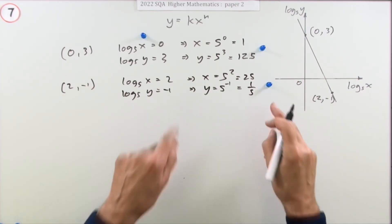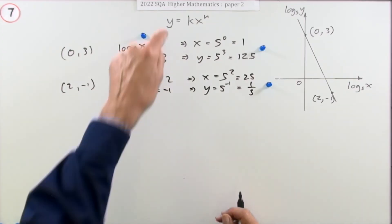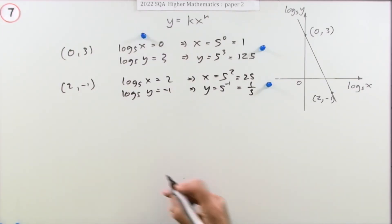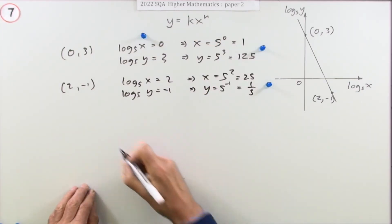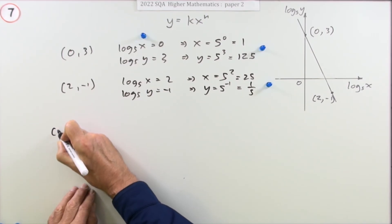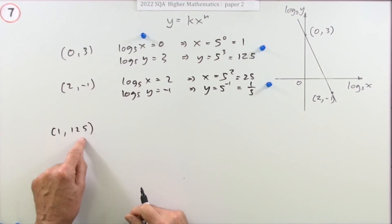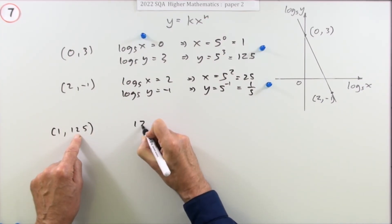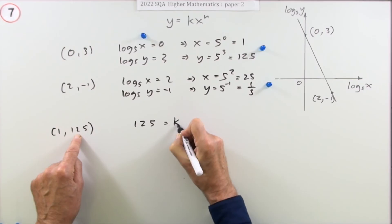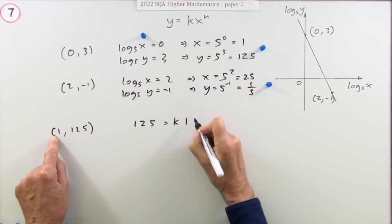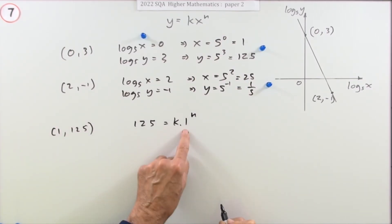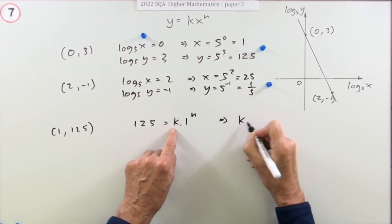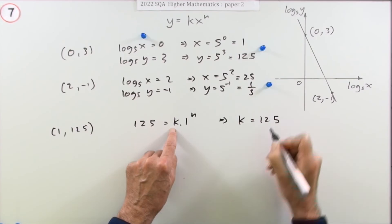So that gets a mark. Now you've put them back into the original form, you can create two equations now that will involve k and n. So taking the first point, which was (1, 125), back to the original points, and feeding it into that, you've got 125 is k times 1 to the power n. Well that's quite handy, because 1 to the power n is 1. So straight away from that, you've got k equals 125.